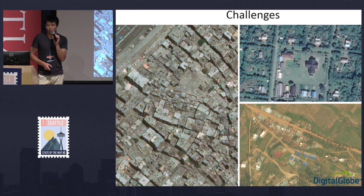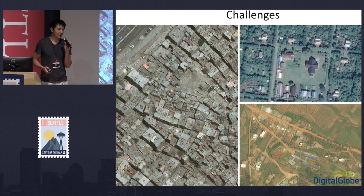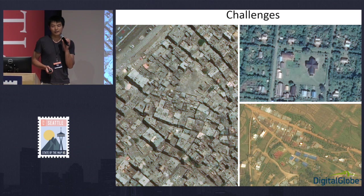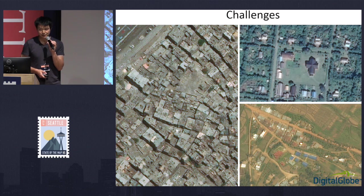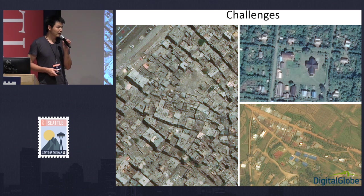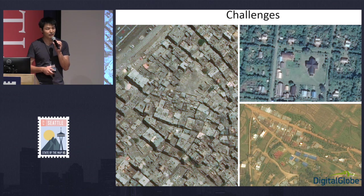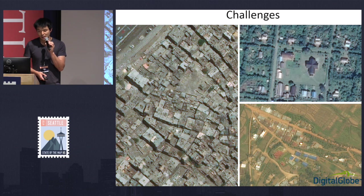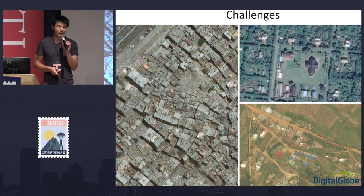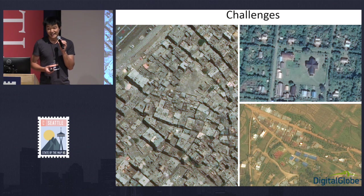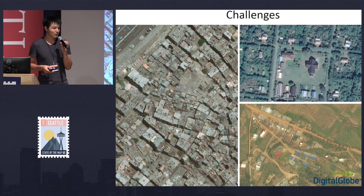However, when we move to developing countries — which we care a lot about and where map quality lags behind — you can see the significant challenge. In this image from DigitalGlobe, on the left-hand side is a city in Egypt, on the top right is a village in India, and on the lower right is an area in Rwanda. In these developing countries, the majority of roads are not paved, and they vary a lot even country by country in terms of color, width, and texture, as well as the surroundings that are crucial for computer vision to decide where the roads are.